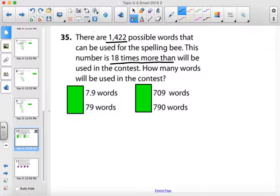Well, notice the word times, and in order to figure this out, the unknown amount, it's actually 18 times more than will be used, than an unknown. So, it is 18 times some unknown amount equals 1,422.